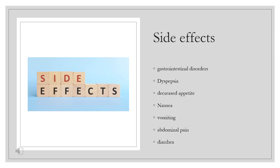Some patients may experience serious adverse reactions, including acute pancreatitis — symptoms include persistent severe abdominal pain, sometimes radiating to the back and accompanied by vomiting — hypoglycemia, and renal impairment, which may sometimes require hemodialysis. The risk of hypoglycemia is increased if the drug is used in combination with sulfonylureas or insulin. There is also a potential risk of medullary thyroid carcinoma associated with the use of the drug.